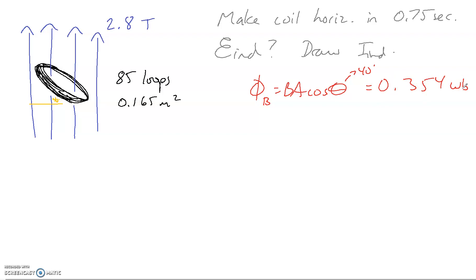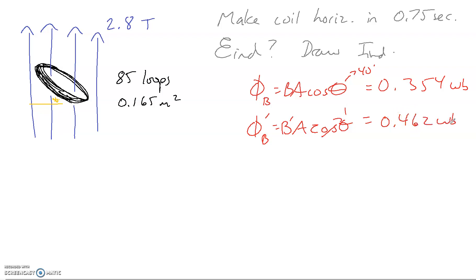When the coil is made horizontal — goes flat — that's maximum flux, so cosθ equals 1. We just do B times A: 2.8 times 0.165 gives us 0.462 Webers. Now we use these values to get our change in flux. It's a positive change because flux got stronger — subtracting 0.354 from 0.462 gives us a change in flux of 0.108 Webers.